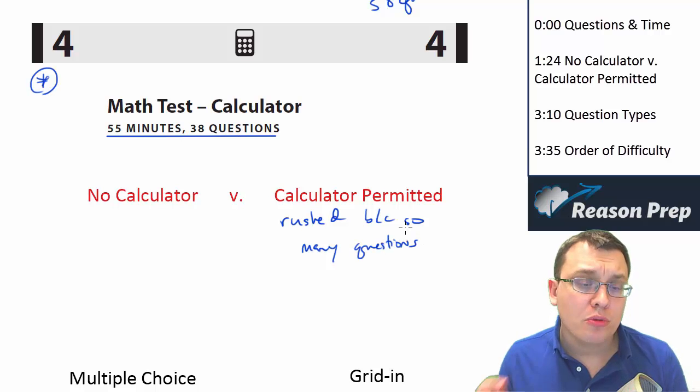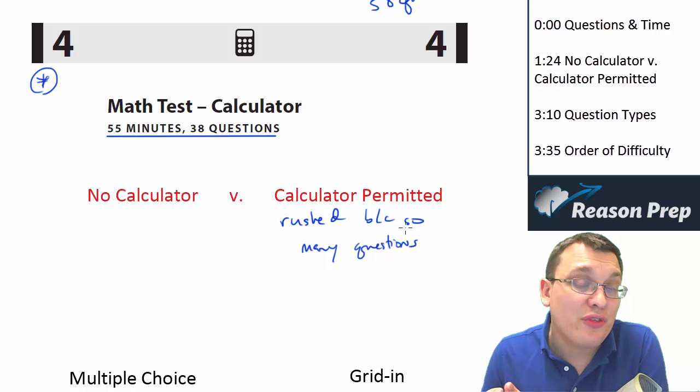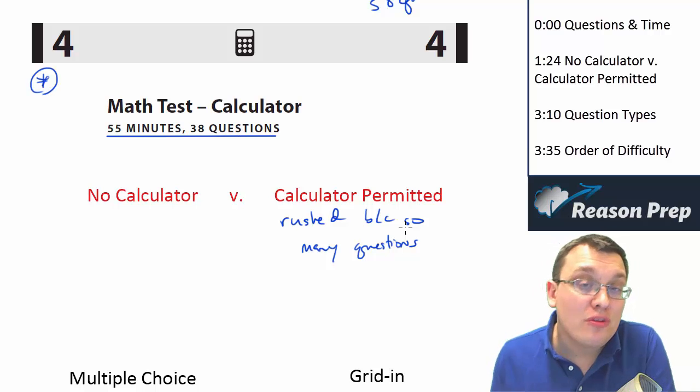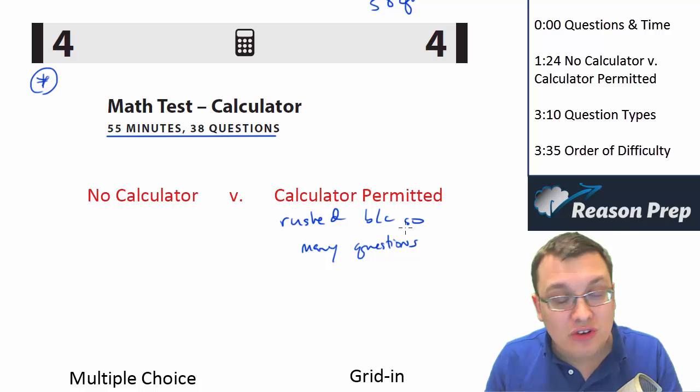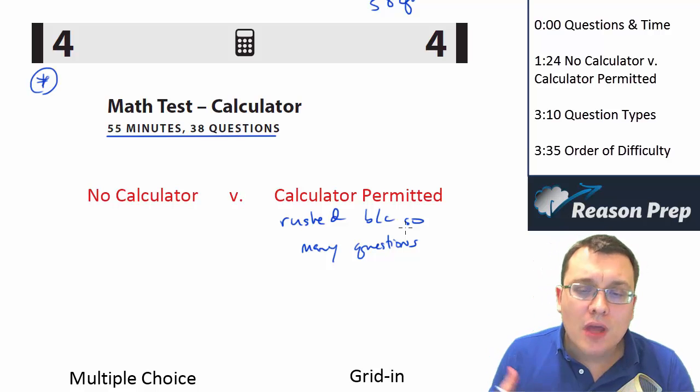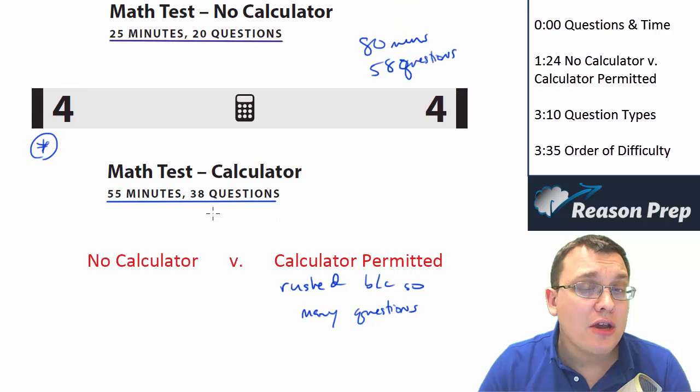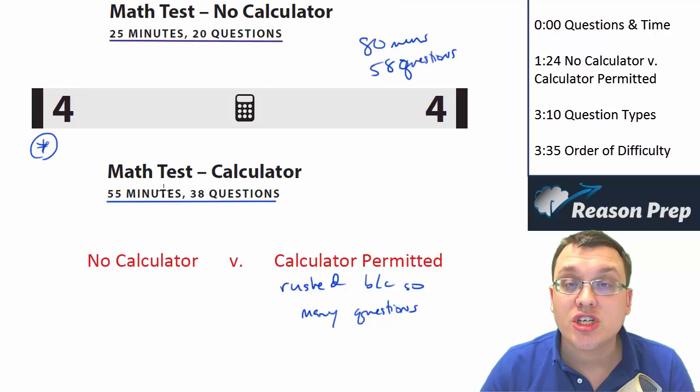And not only do you have the multiple choice, which we're going to look at in a second, you've also got the grid-ins, and they come after the multiple choice, so it's almost like the section restarts and you get into different difficulty levels. For that reason, a lot of students struggle the most with the time here because there's just the volume of questions, and the position of the test in the order of tests makes a big difference.